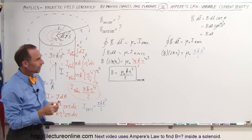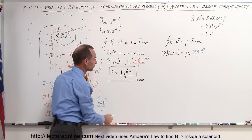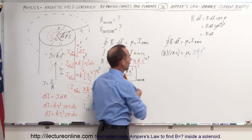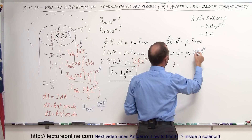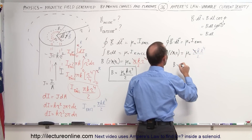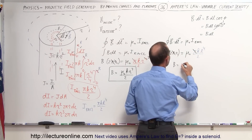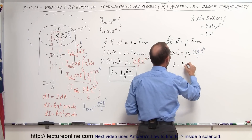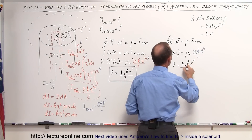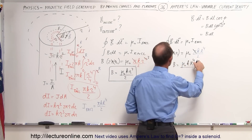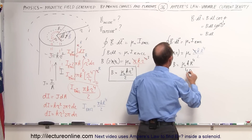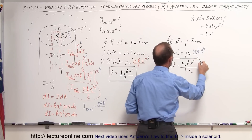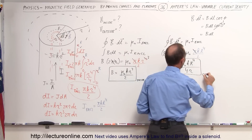Simplifying: the π's cancel, giving the magnetic field outside equal to μ₀·k·R⁴ divided by 4·r. That is the strength of the magnetic field outside the conductor.